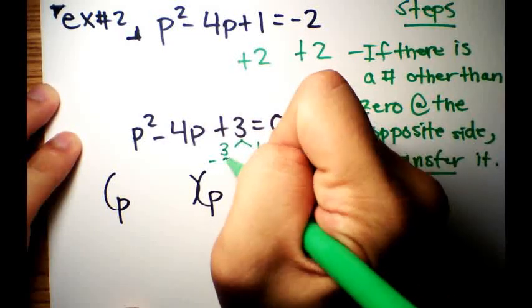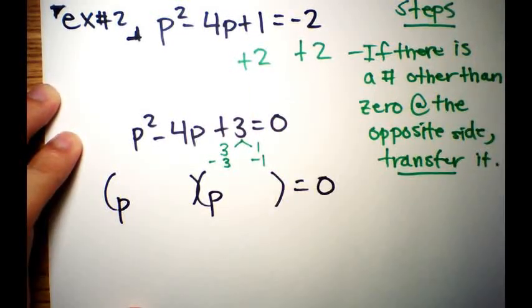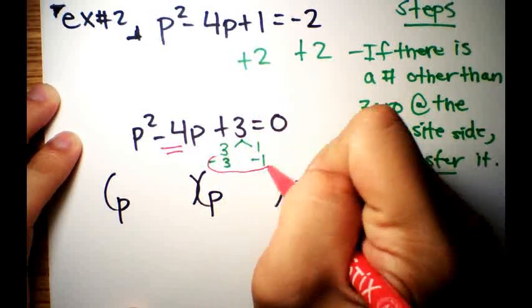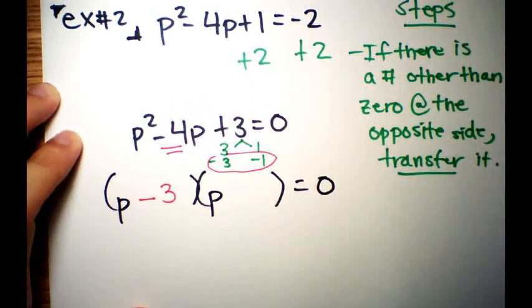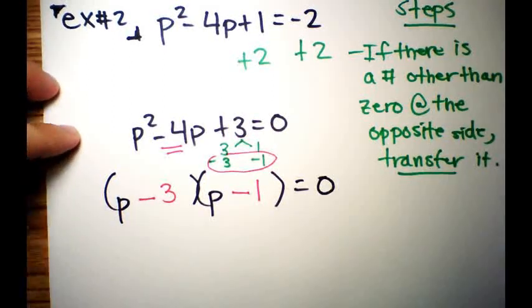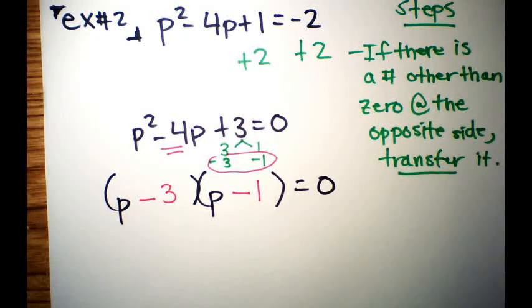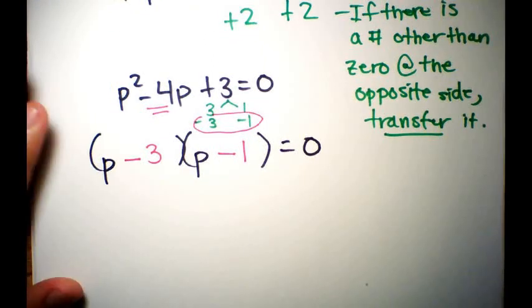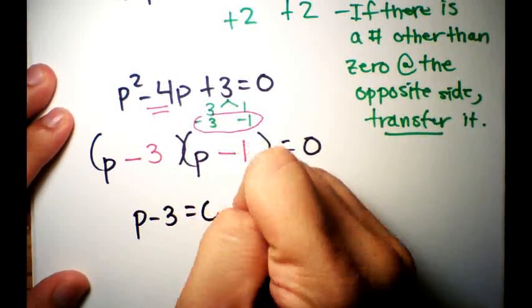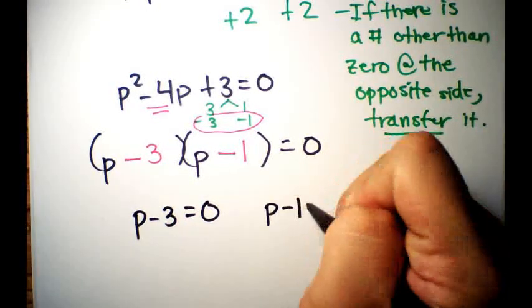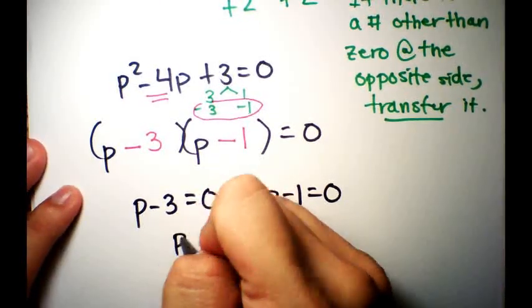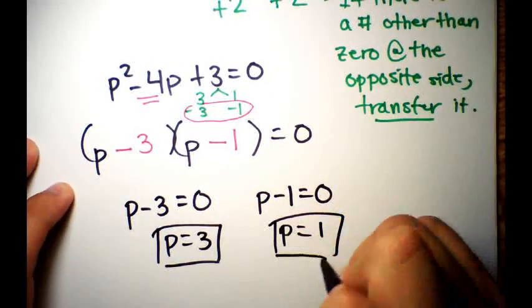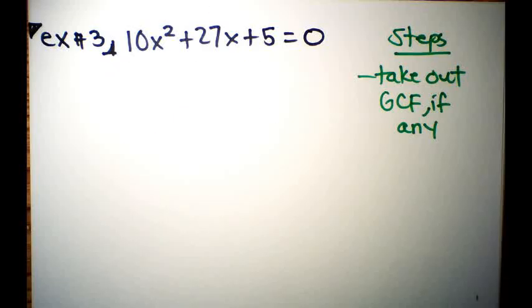The pair that adds up to negative 4 is negative 3 and negative 1, giving (p - 3)(p - 1) = 0. The order of the parentheses doesn't matter. Set each equal to zero: p - 3 = 0 and p - 1 = 0. Solving gives p = 3 and p = 1.